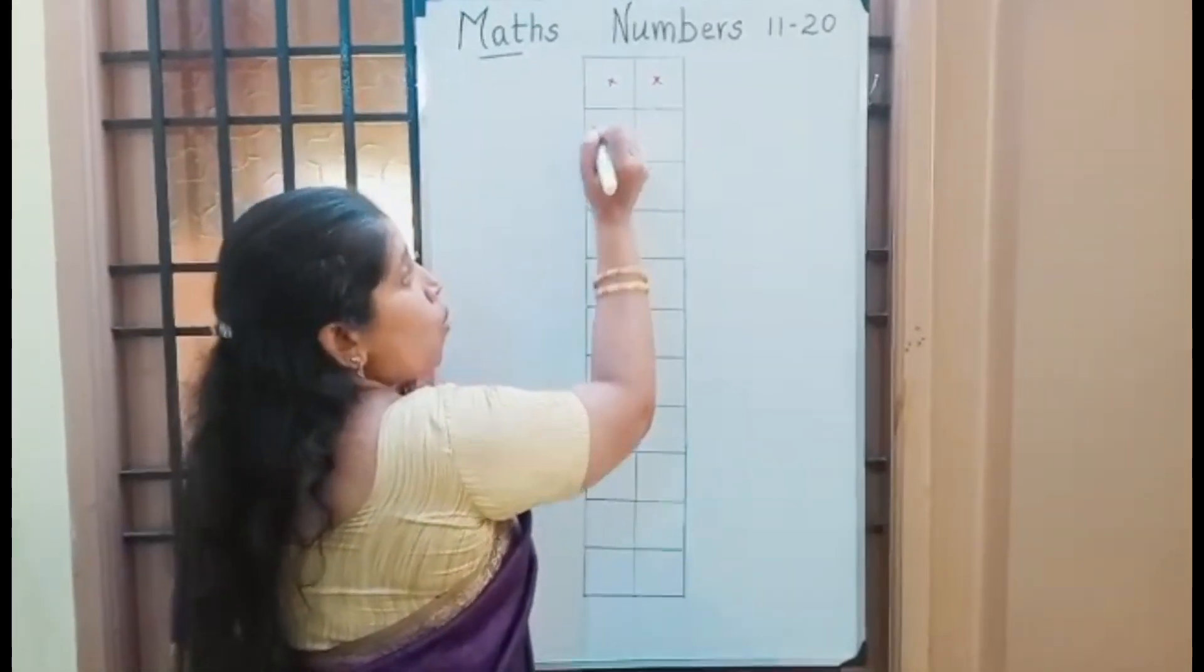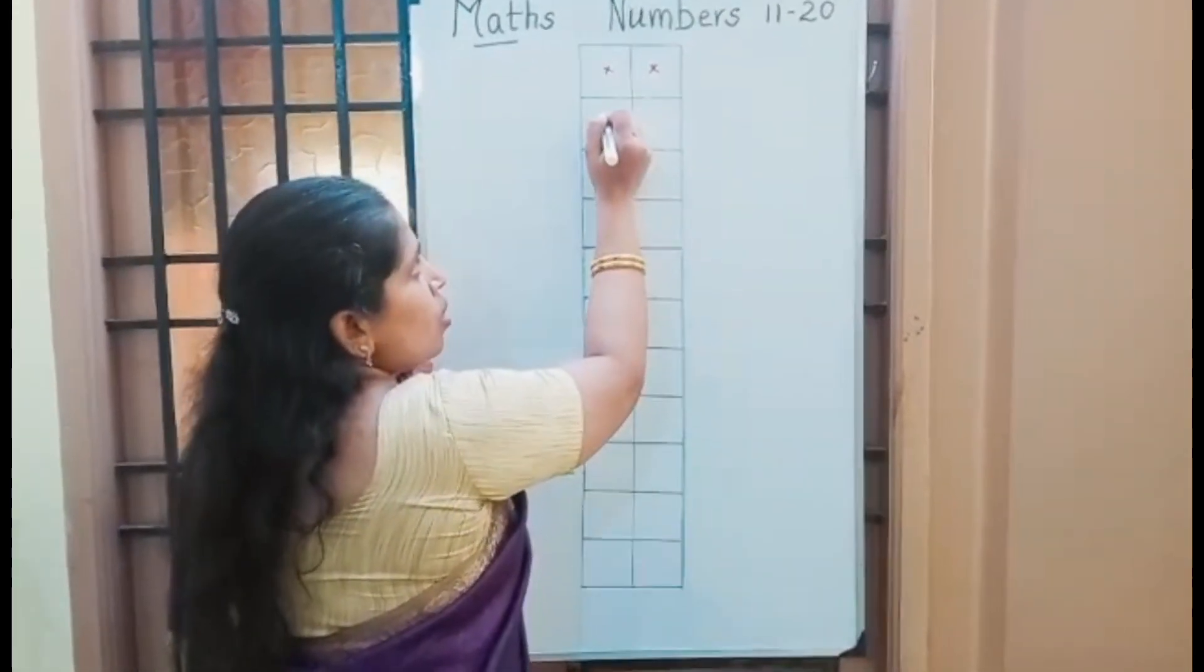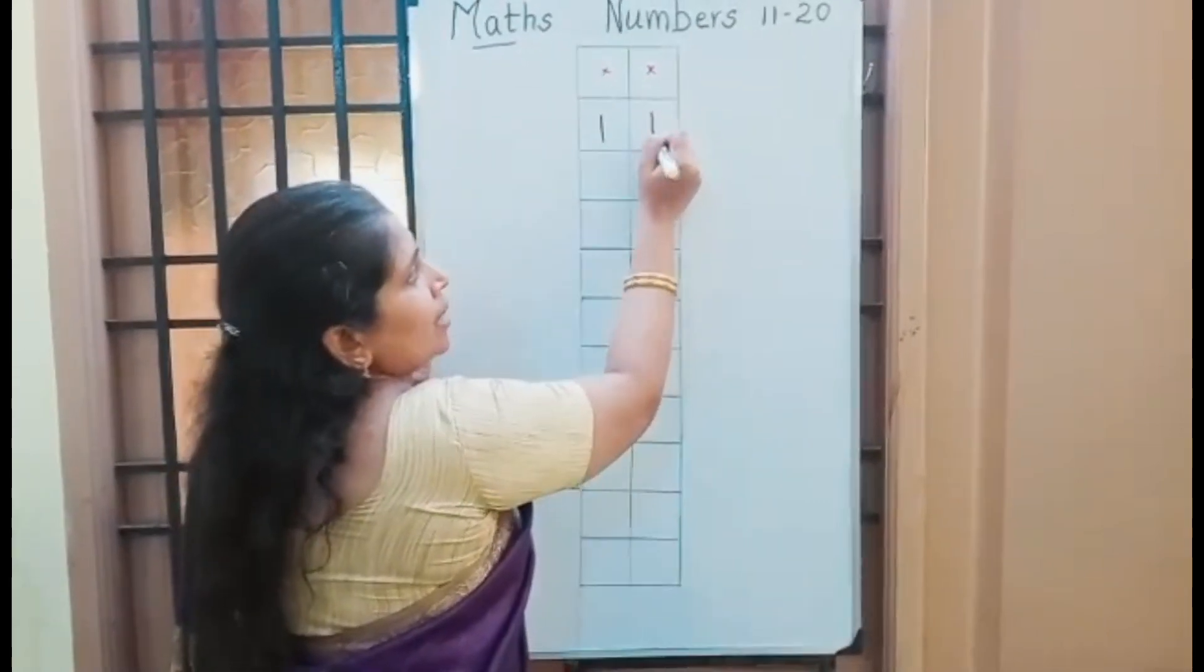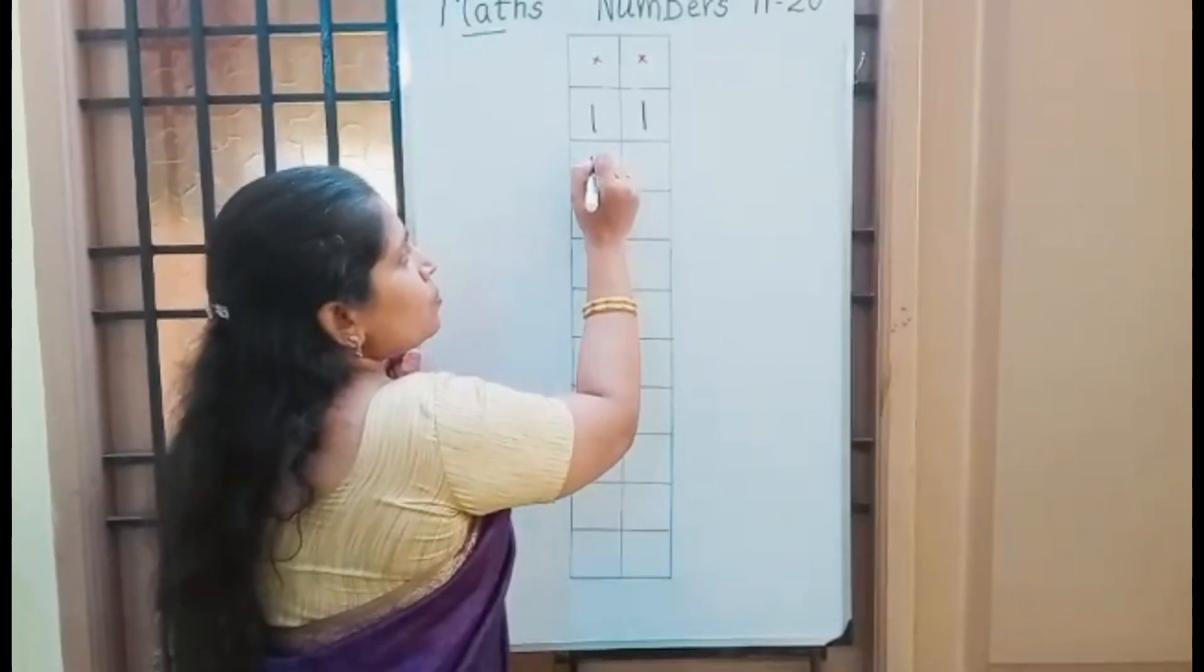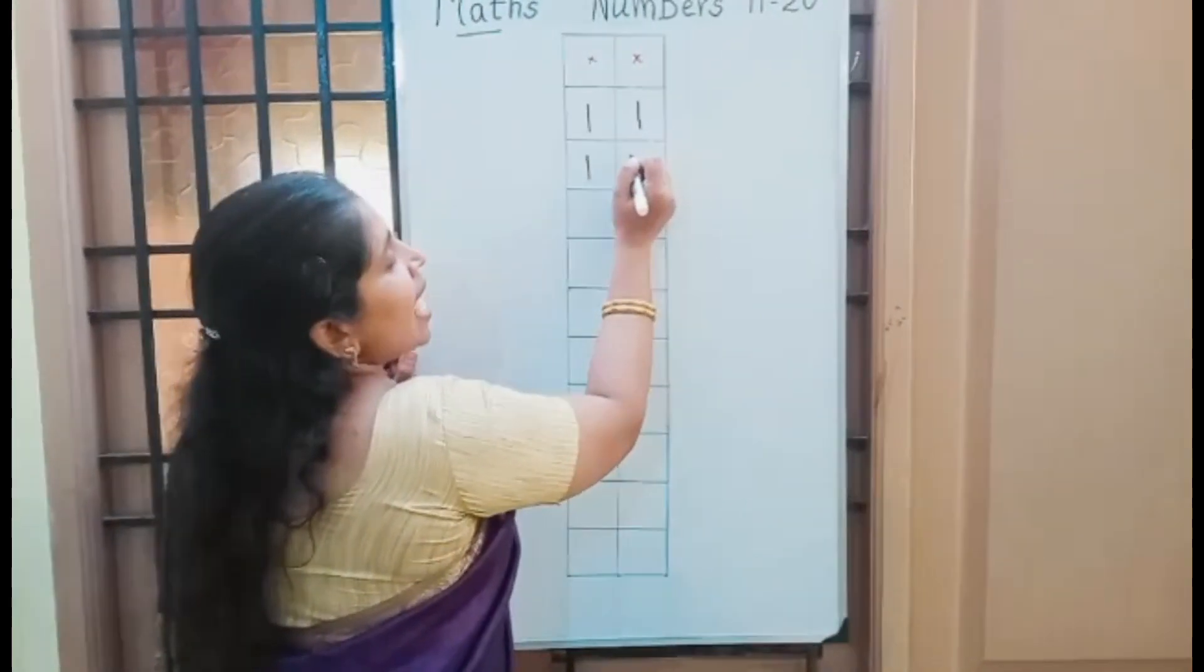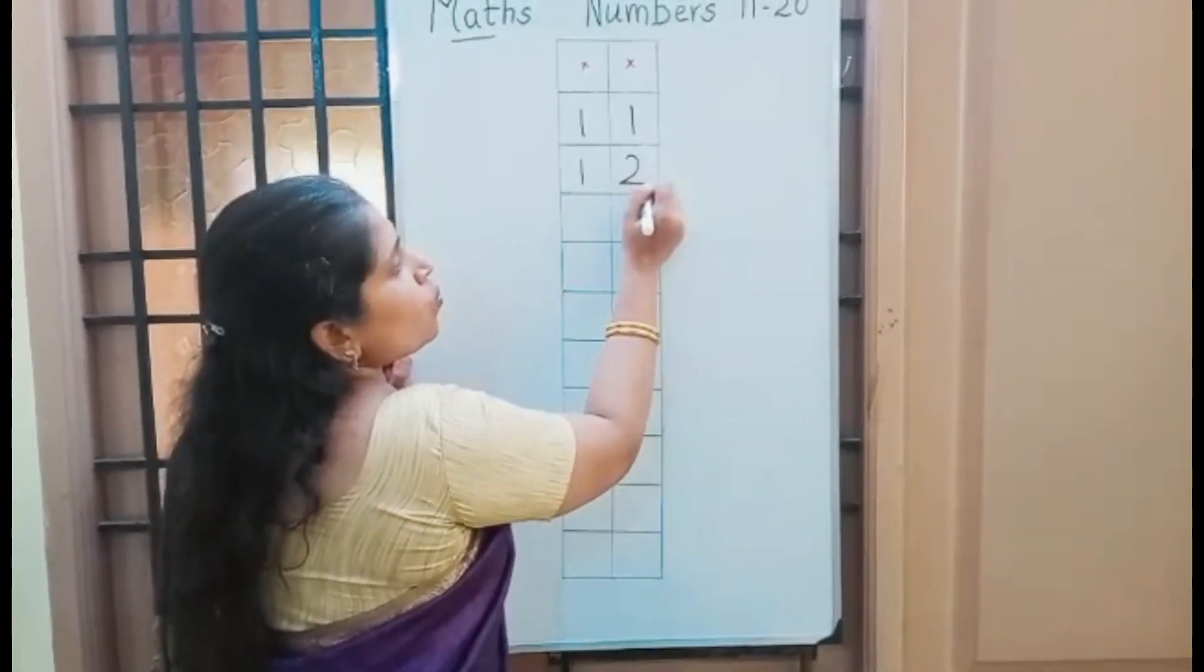See here, 11: 1, 1, 11. So 1, 1. 1, 2, 12. Put 1 in 10s place and 2 in 1s place.